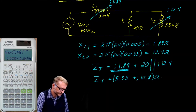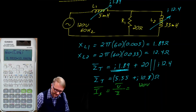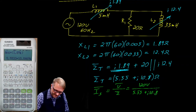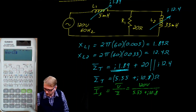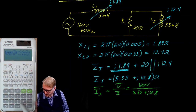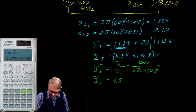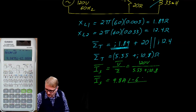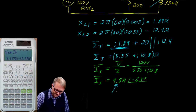The source current is V/Z = 120∠0° / (5.55 + j10.8). With the impedance already loaded in the calculator, we divide 120 by it, invert, then shift to polar form. The current is 9.8 amps at a phase angle of −63°. Always remember to put currents into polar form, because that is what the meter reads.